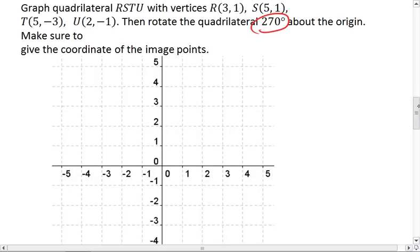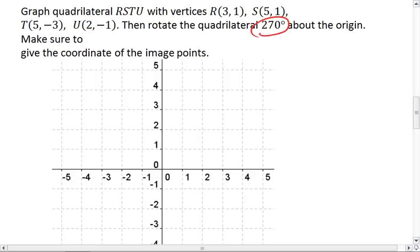First things first, we want to plot our original points. So we'll plot the pre-image, or the original object, in blue. R is at 3, 1, S is at 5, 1, T is at 5, negative 3, and U is at 2, negative 1. So here are your points.